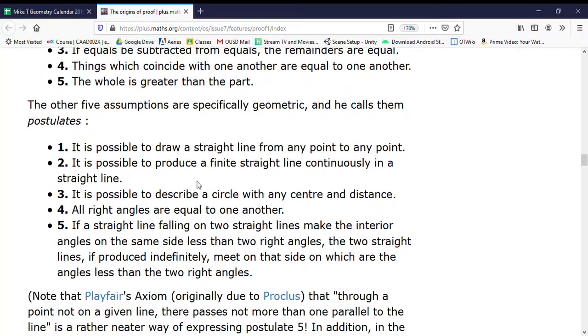And then the five assumptions we've actually been working from: It's possible to draw a straight line from any point to a point. So if I put two points down, I can connect them together. He uses 'straight line' to actually mean a line segment, so that's kind of interesting—we talk about line segments differently than Euclid did. It's possible to produce a finite straight line continuously in a straight line.